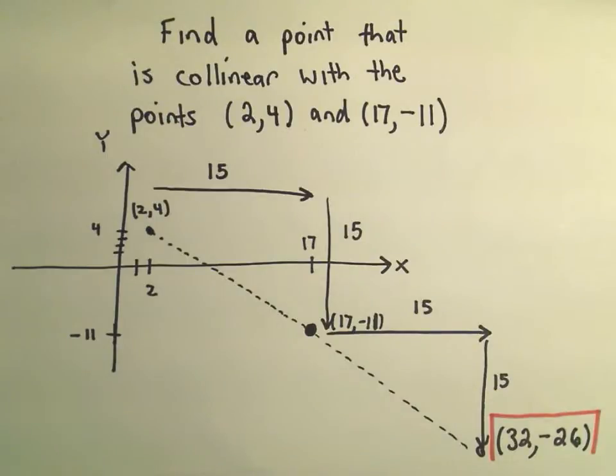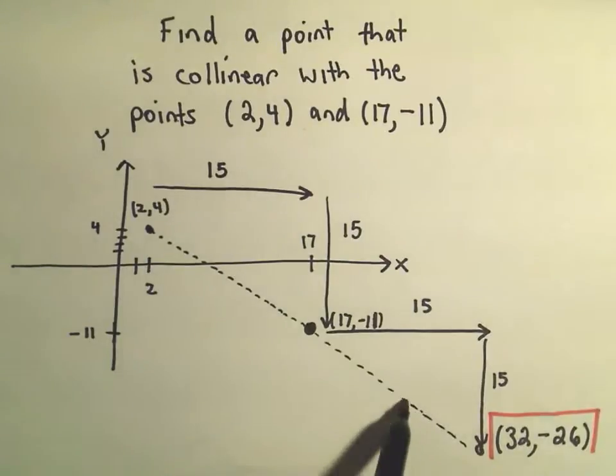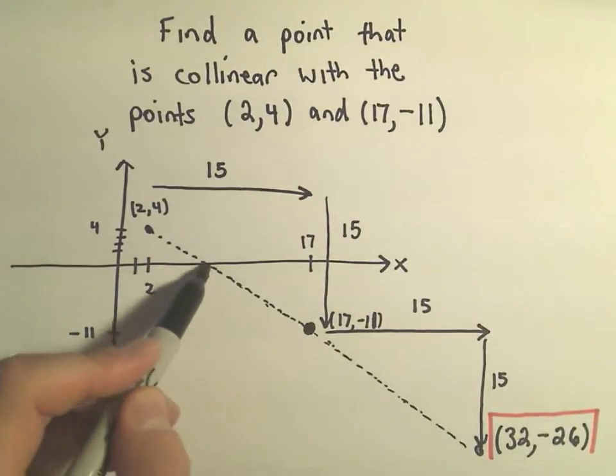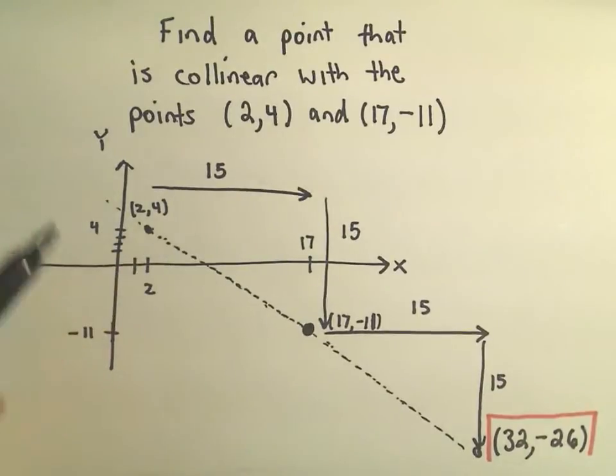Certainly, any point on this line is collinear with the two given points, so there are infinitely many points that would work. But here's one little trick to find another one.